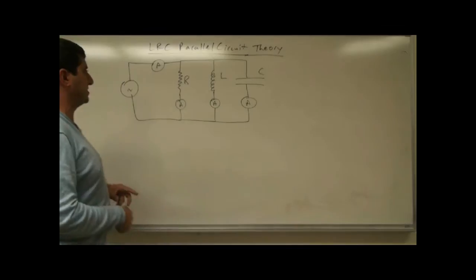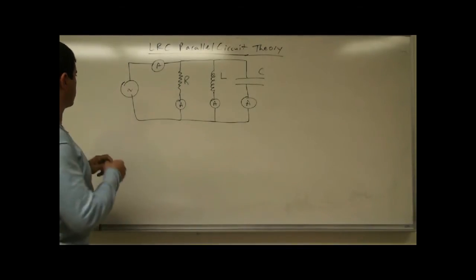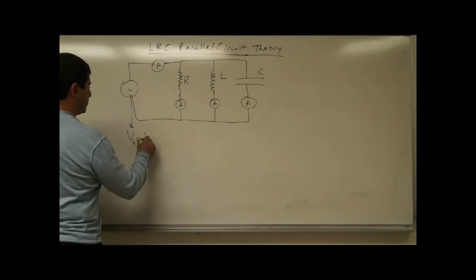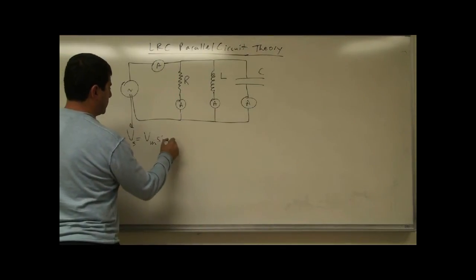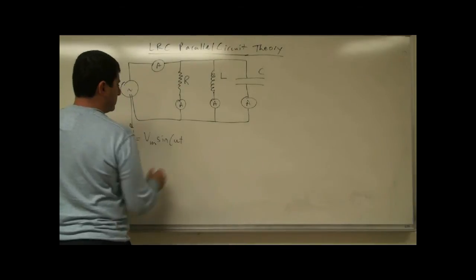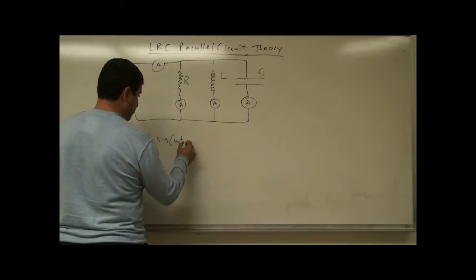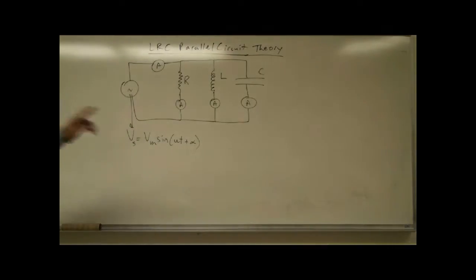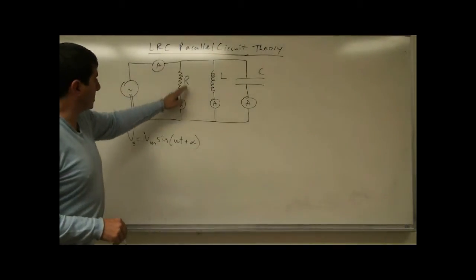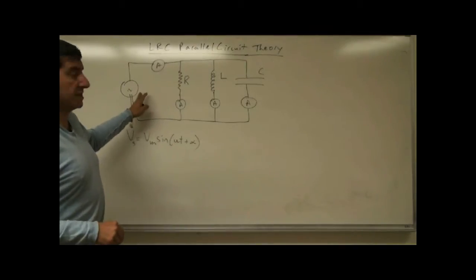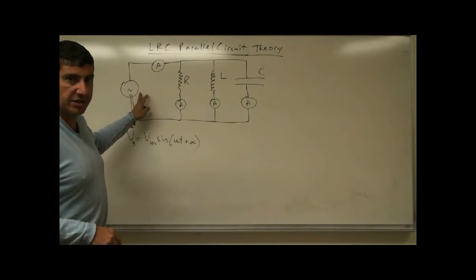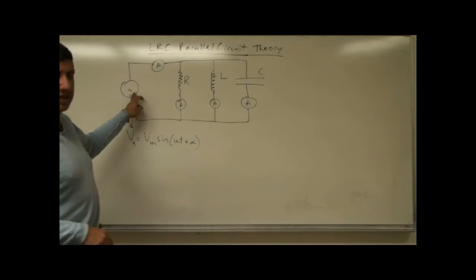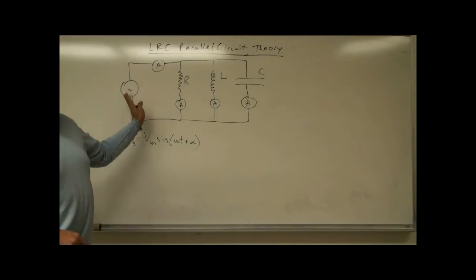So how do we analyze this? The AC source is going to give you some voltage: V source equals Vm sine of omega t, and then it could be at a certain angle alpha. The voltage is going to divide up in parallel, so the voltage across the resistor is going to be in sync with the voltage of the source and equal to it.